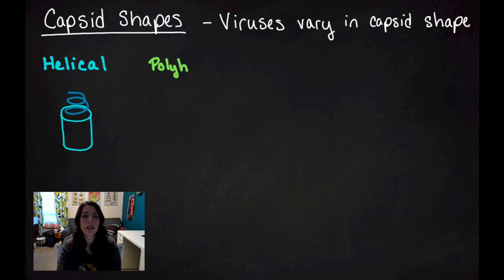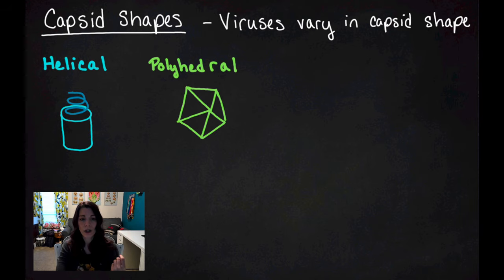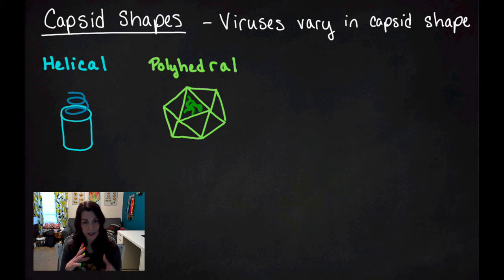But you can also have polyhedral viruses. Those of you that remember your geometry remember that poly means many. We're going to draw a polyhedral virus. We have a capsid that is a many-sided shape. This one happens to be made of triangles and then it contains nucleic acid.